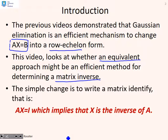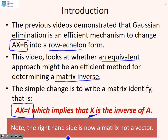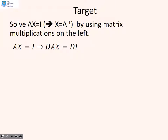The simple change we're going to do here is to write a matrix identity: we write A × X = I, which implies that X has to be the inverse of A. We note that the right-hand side is now a matrix, not a vector, because the right-hand side is the identity matrix. So we're trying to solve A × X = I, which implies X = A⁻¹, using matrix multiplications on the left.